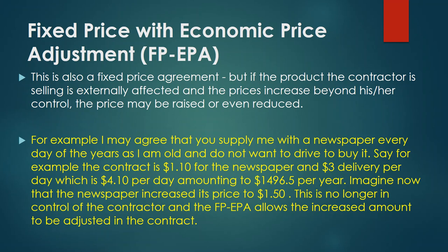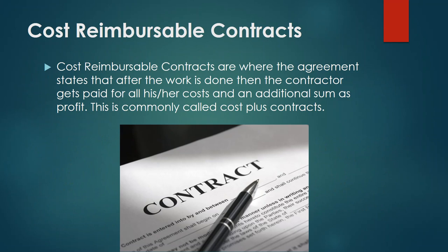Say the delivery cost is three dollars and the total comes to four dollars ten cents per day — about one thousand four hundred ninety-six dollars fifty cents for the whole year. If the newspaper suddenly changes its price to one dollar fifty, the contractor has no control over that. According to the fixed price EPA contract, you would then have to pay the extra amount because it was agreed that any economic price adjustment can be made to the fixed price.